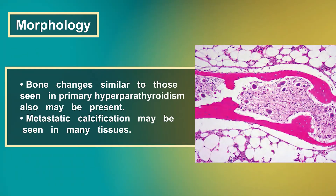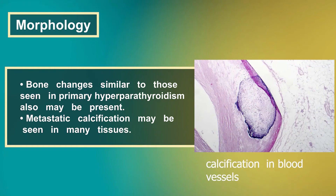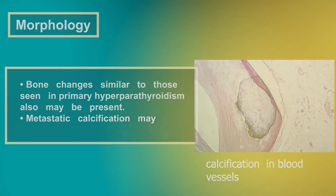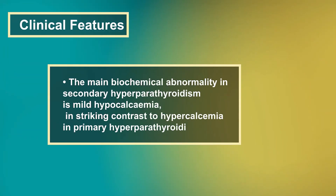Bone changes similar to those seen in primary hyperparathyroidism may also be present, and metastatic calcification may be seen in many tissues. The main biochemical abnormality in secondary hyperparathyroidism is mild hypocalcemia, in striking contrast to the hypercalcemia seen in primary hyperparathyroidism.